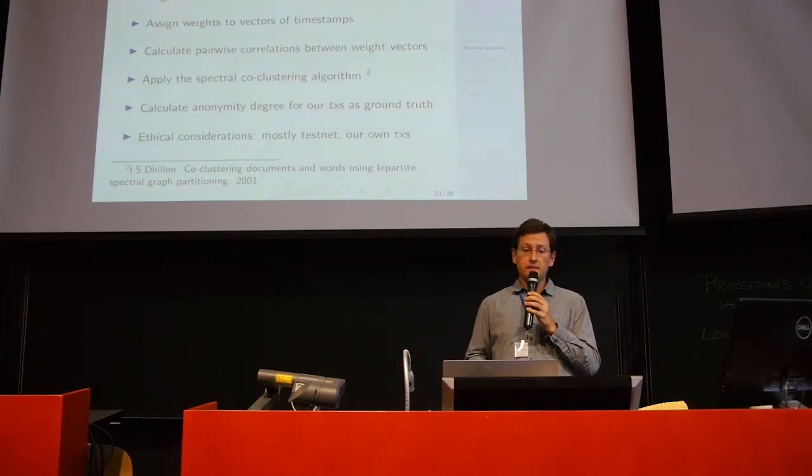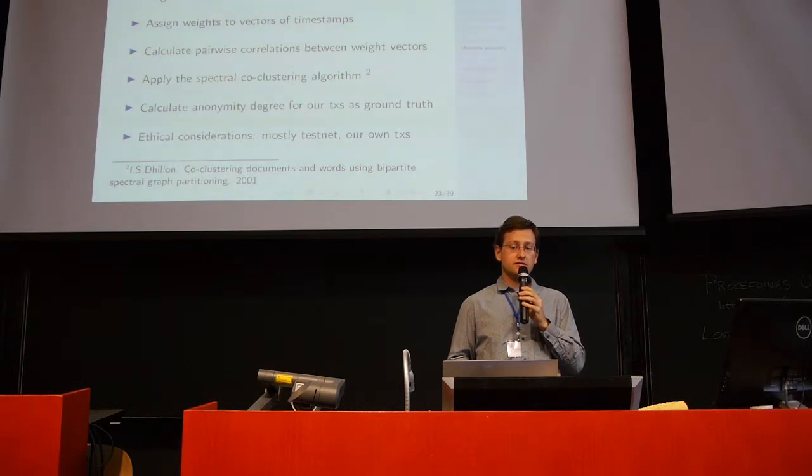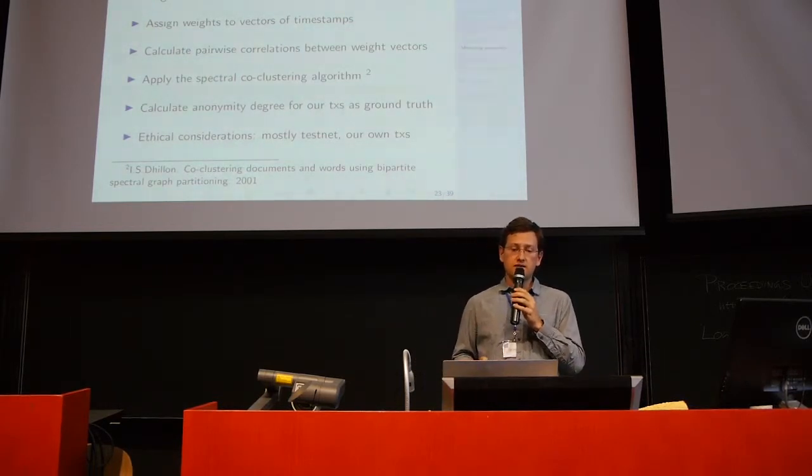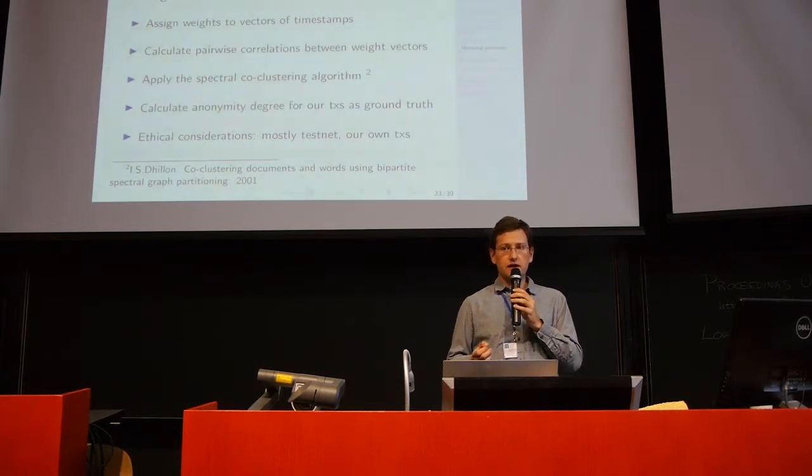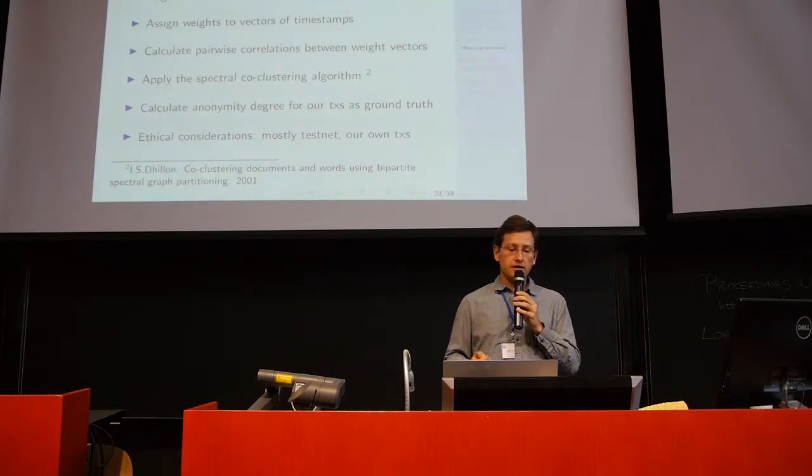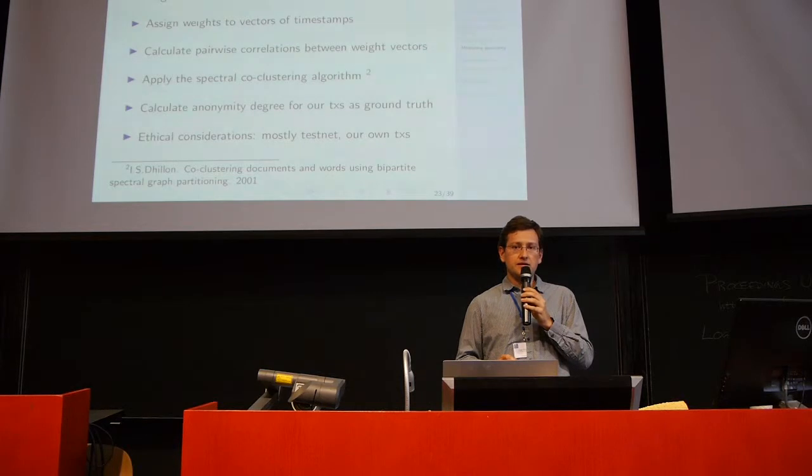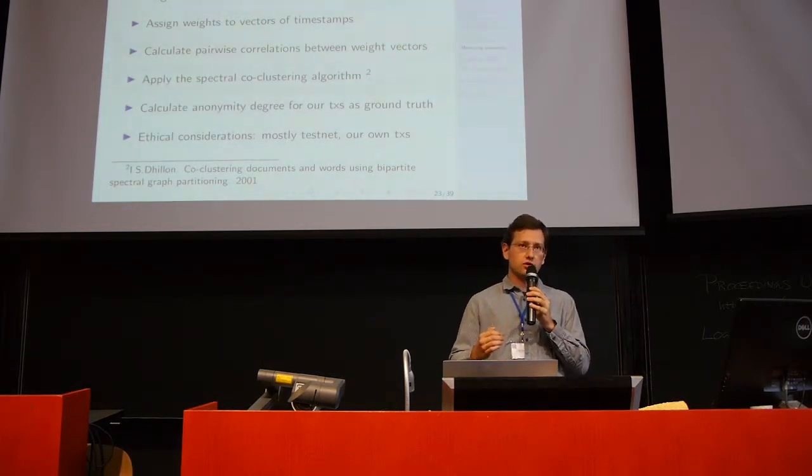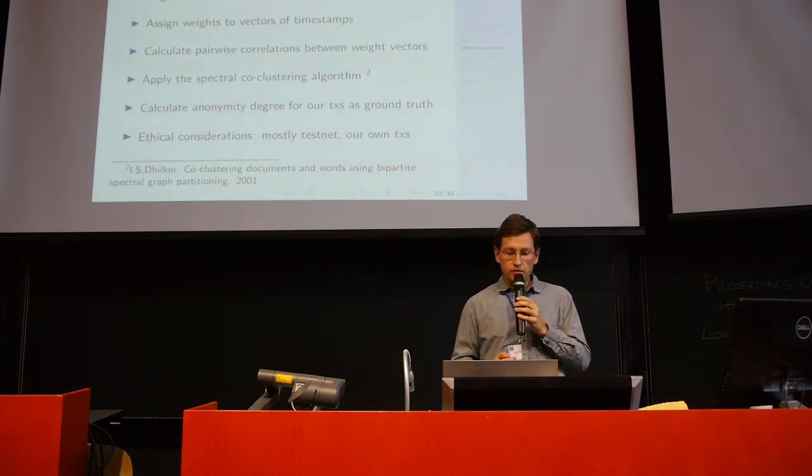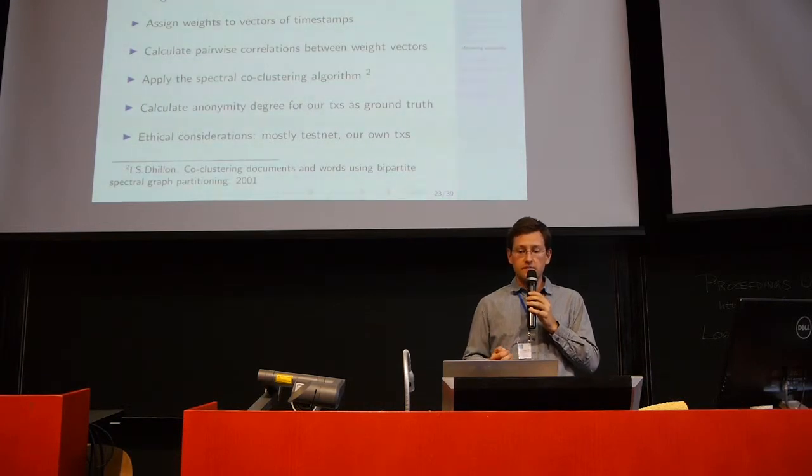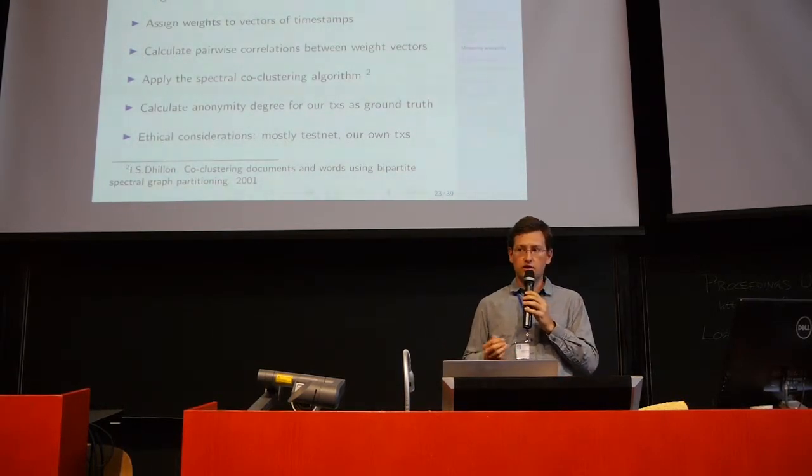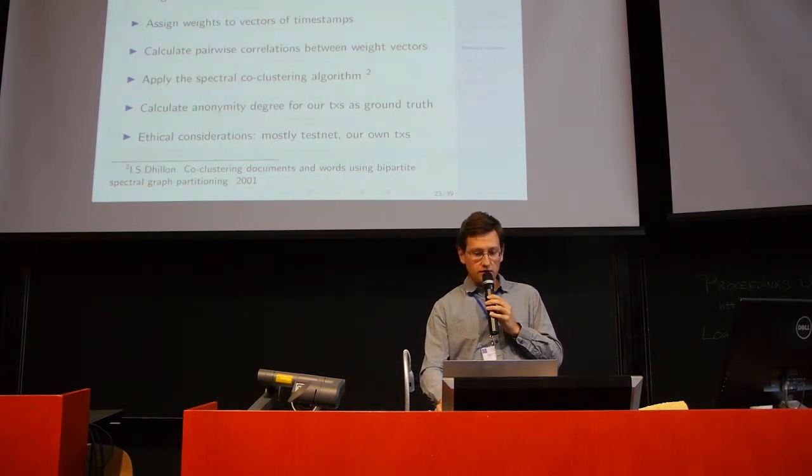Putting this together, what do we actually do? Practically, we connect to many nodes, we actually use 3 servers on 3 different continents Europe, Asia and America to get the better view of the network, we log the transaction announcements and we assign weights to vectors of timestamps for each IP address that relayed a certain transaction to us. Then we calculate the pairwise correlations between these weight vectors and we apply this spectral clustering algorithm which is a method which does exactly what we need, it tries to find the permutation of rows and columns in the matrix such that the internal clustering structure will be visible and it is being implemented in a popular Python scikit-learn library. Then we calculate anonymity degree using our own transactions as the ground truth. I should also mention that we also take ethical considerations into account, we experiment with our own transactions and we are doing most experiments on the testnet.